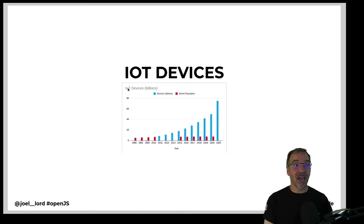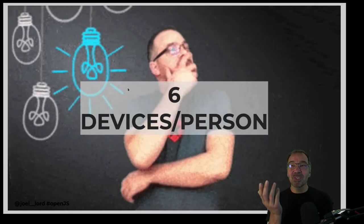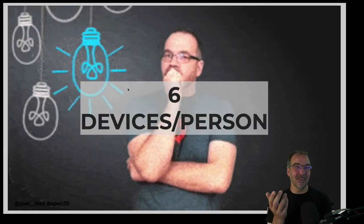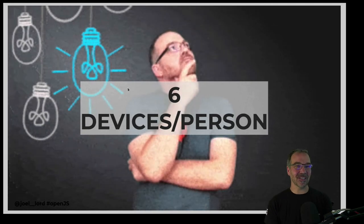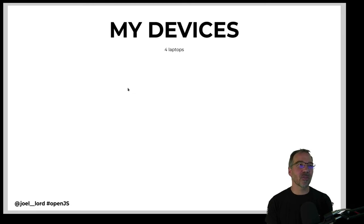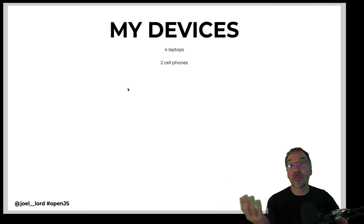I looked at the number of current devices, which is around 50 billion, and divided that by the current world population. That gave me something like six devices per person. There's no way I have six connected devices in my home. So I started thinking — well, I've got two laptops, a laptop for the family, and my wife has her home laptop. So that's four connected devices.